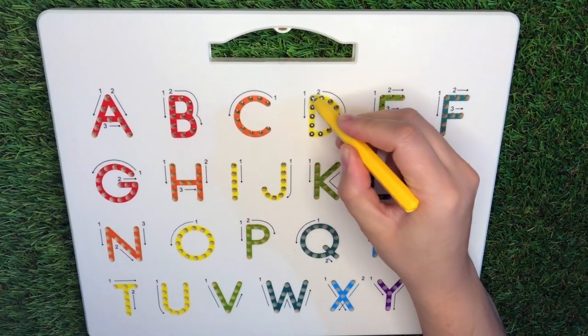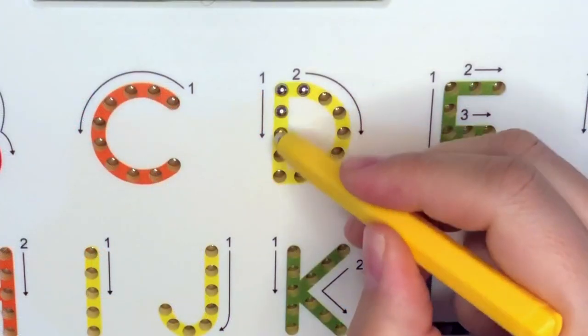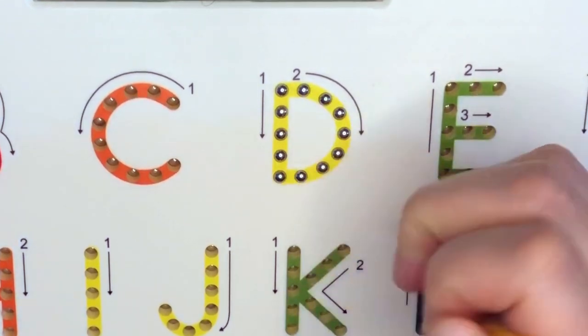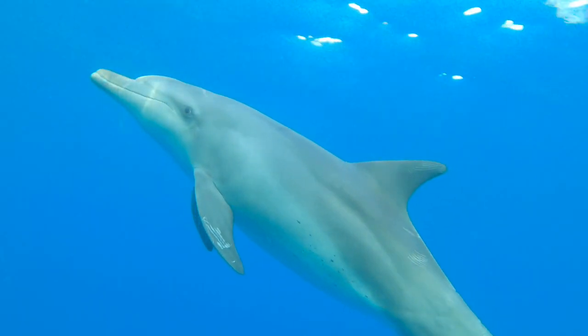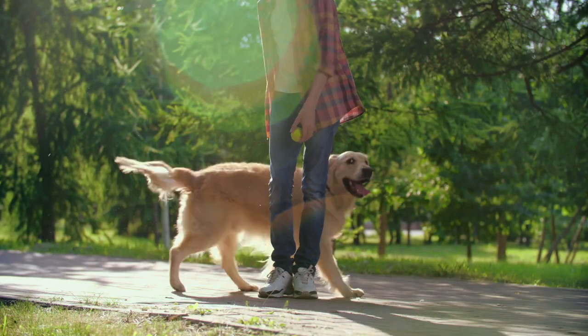Let's move on to the next letter, D. D is just pull down, go back to the top, and around. D is for dolphin, donut, and dog.